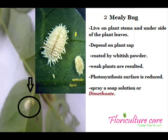Mealybugs live on plant stems and the underside of plant leaves. They depend on plant sap by sucking it. Mealybugs can be seen with the naked eye — they are coated by a whitish powder, which helps to identify them easily. Lower amounts are not much of a problem, but in severe conditions weak plants result. Photosynthesis surface is reduced, and they cover the plant so it seems white. To control them, spray a soap solution; in severe conditions, spray an insecticide like Dimethyloid.